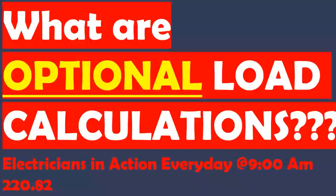Out in the field, you may be tempted to use the optional method for a load calculation. Off the cuff, you could probably use it and end up pretty accurately with your load calculations. But if any inspector asks you to do a load calculation, just go ahead and do the standard method. They're not going to want to see the optional method because it's likely going to give you a smaller amp draw, which allows you to have things in your favor as far as sizing pipe, wire, and the service.